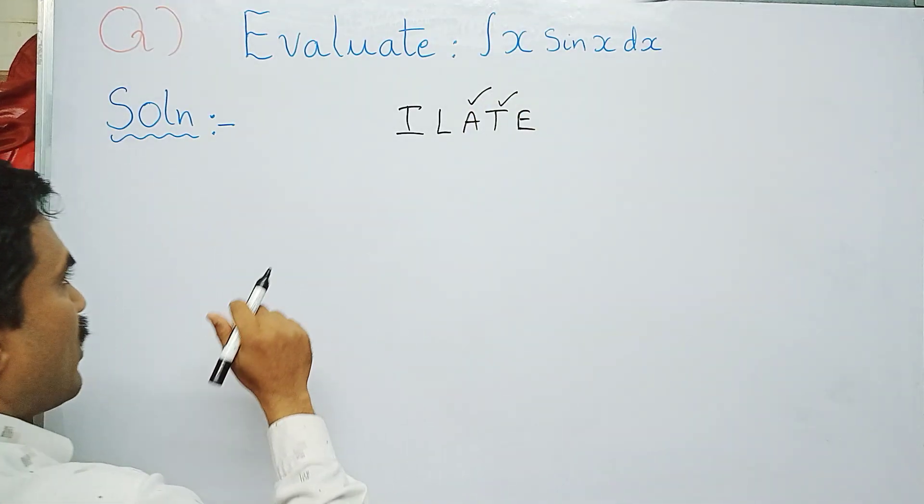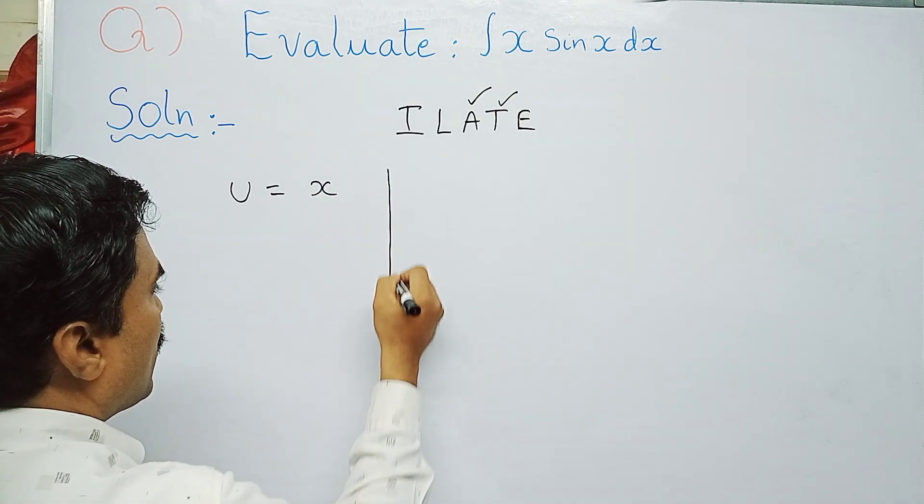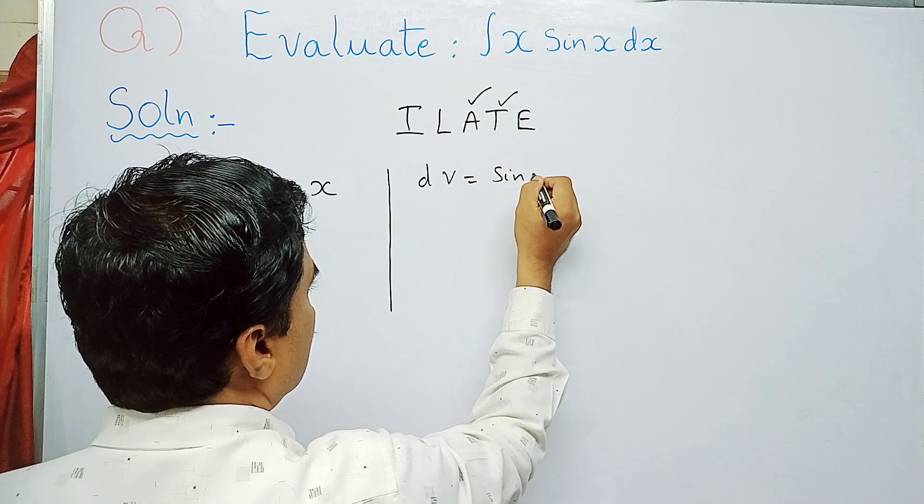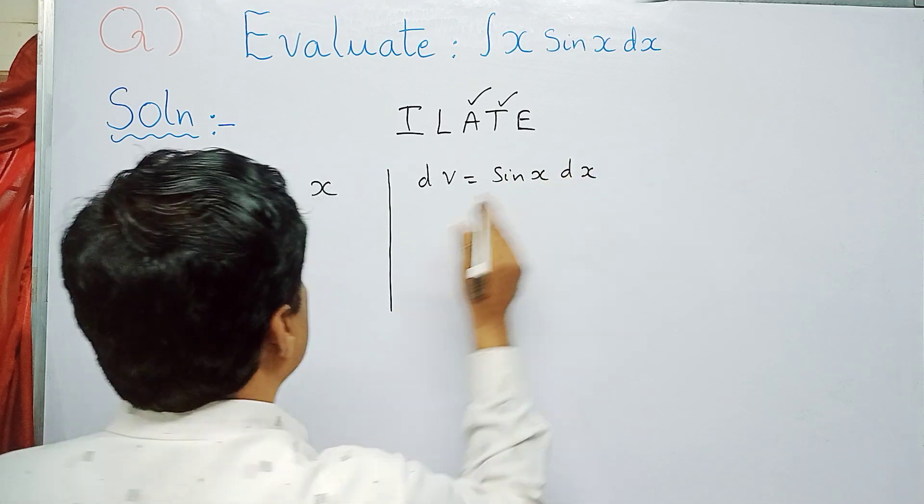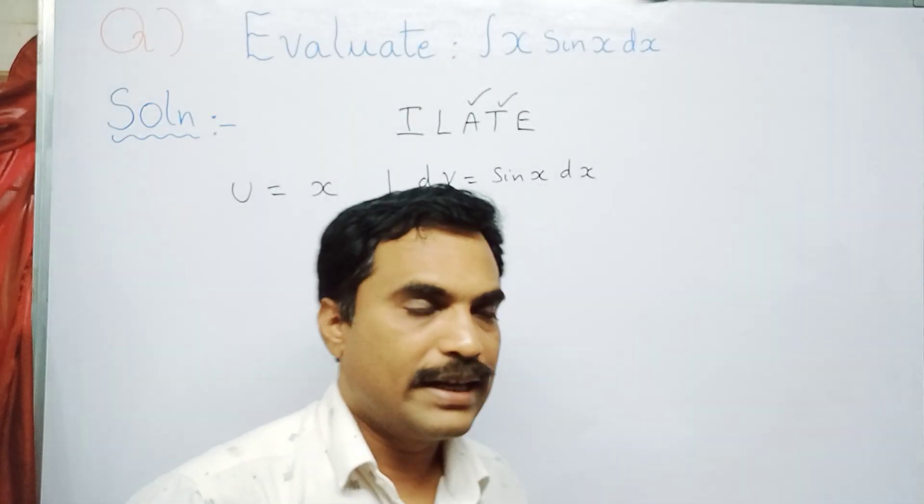We take u as x, and the other function dv should be taken as sin x dx. The left-hand side part we have to differentiate, and the right-hand side we have to integrate.